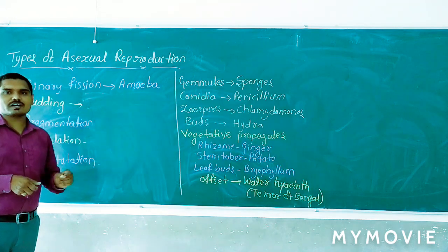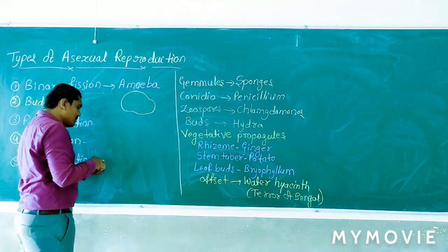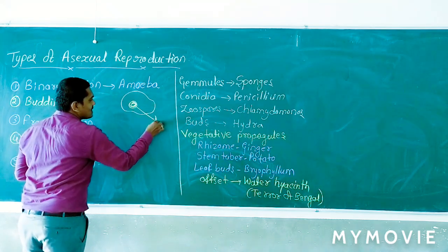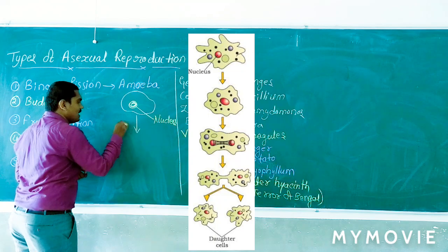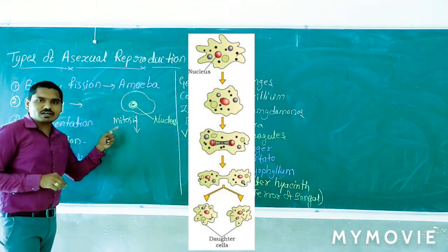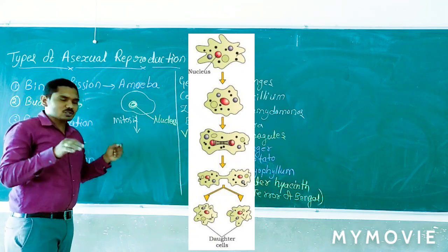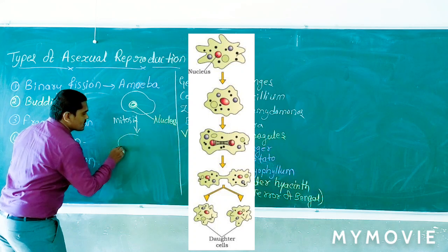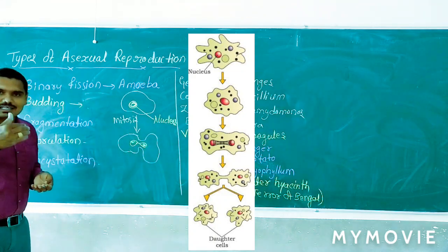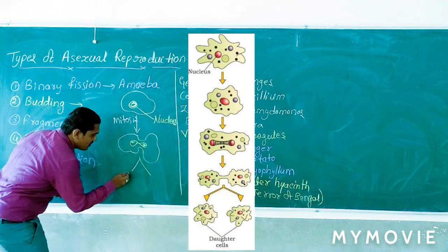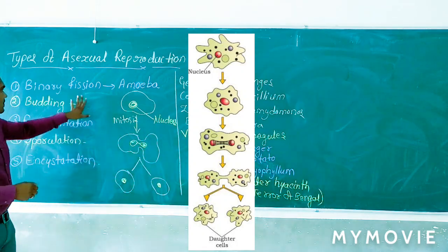Binary fission commonly occurs in amoeba. Amoeba is a unicellular organism — it has a single cell with a nucleus, because it is a eukaryotic organism. Once it undergoes asexual reproduction through the mitosis cell division process, the nucleus starts to divide equally. First it forms furrows, which lead to the differentiation of the nucleus. Finally, one amoeba produces two daughter amoeba cells, each having a nucleus. This is binary fission.